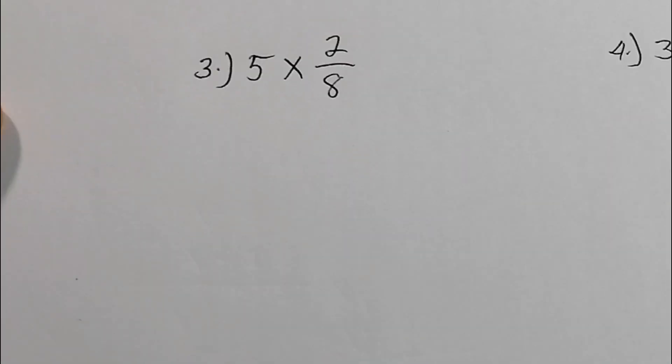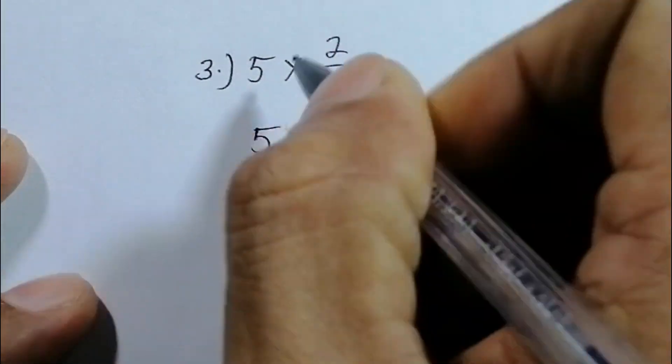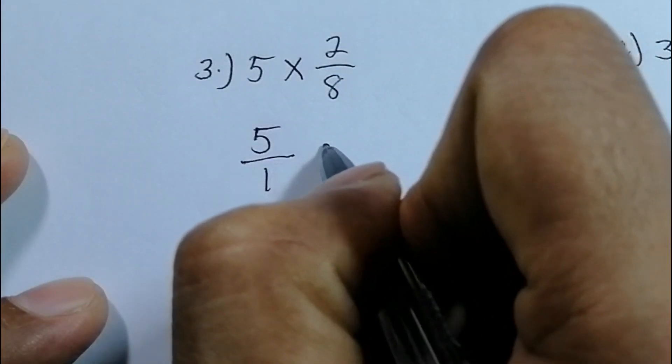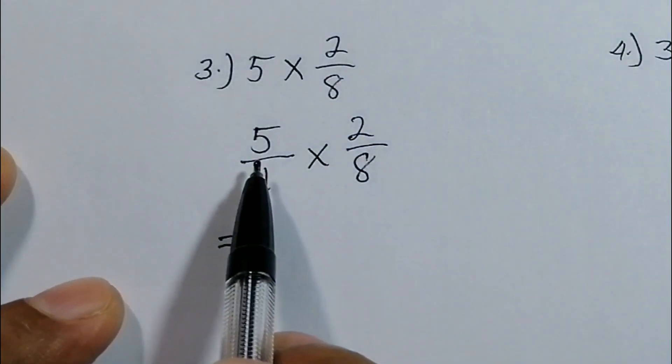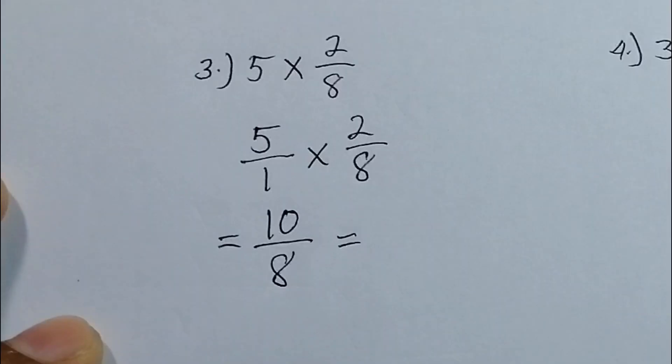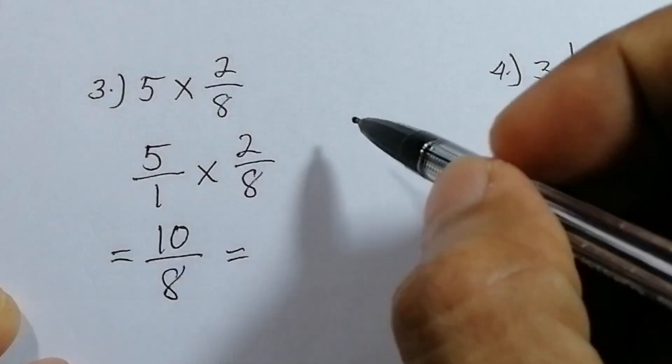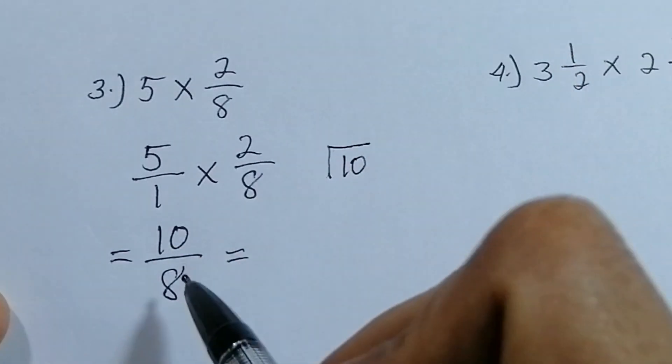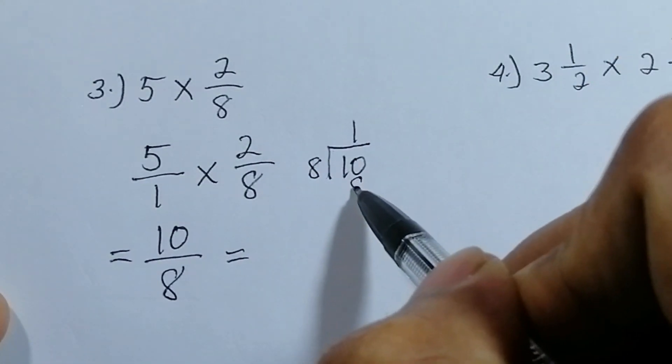Next. Number three. We have here whole number. Multiply it by two over eight. Again, with the same process using this one. So we're gonna write five over one times two over eight. It's equal to five times two, ten, over eight times one, eight.